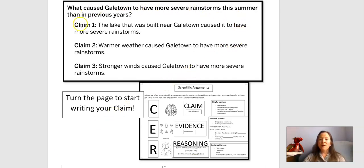Claim one: the lake that was built near Galetown caused it to have more severe rainstorms. Claim two: warmer weather caused Galetown to have more severe rainstorms. And claim three: stronger winds caused Galetown to have more severe rainstorms.